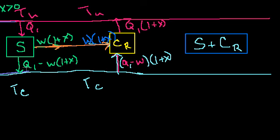So what's happening now? What's the net heat that's being taken in or put out of here? So we have Q1. So in this direction, we have Q1 minus w times 1 plus x. But in this direction, we have Q1.